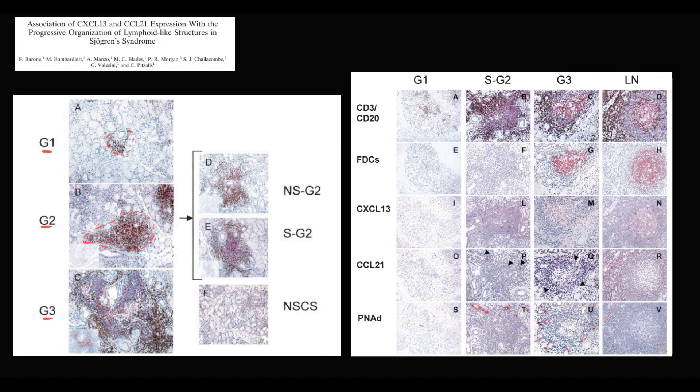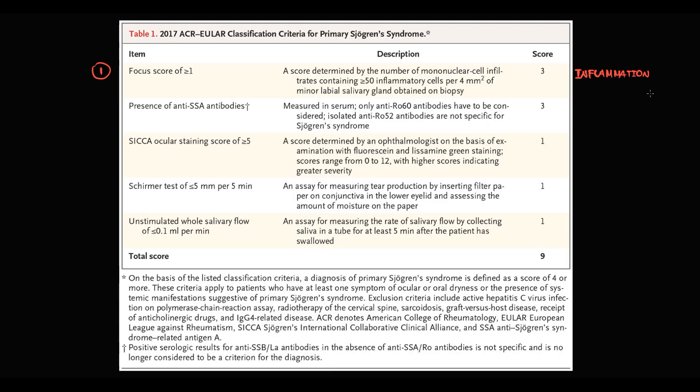On the histology image we see local infiltration in grade 1, large infiltration in grade 2, and massive infiltration in grades 3 and 4. So the FOCUS score tells us about the severity of inflammation inside the gland. The second criterion is the presence of anti-SSA antibodies, also called anti-Ro antibodies, which serve as a marker of inflammation. The more severe the inflammation, the higher the amount of antibodies. In Sjögren's syndrome, it is anti-Ro antibodies and anti-La antibodies that we use as diagnostic criteria.